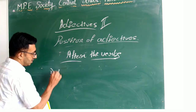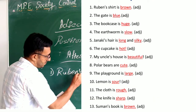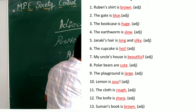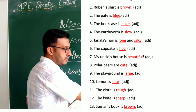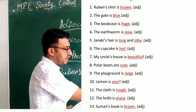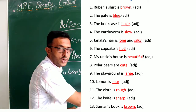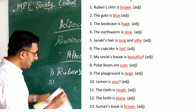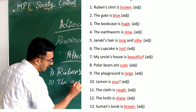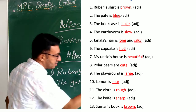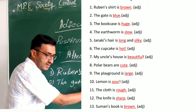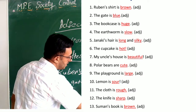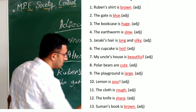The first sentence: 'My shirt is brown.' Brown is an adjective, and here we use it after the verb, so that is the answer. Second sentence: 'The gate is...' — here also we use the adjective after the verb, so that is the right answer. Third sentence: 'The bookcase is...' — here also 'is' is the verb, and we use the adjective after the verb, so that is the right answer.